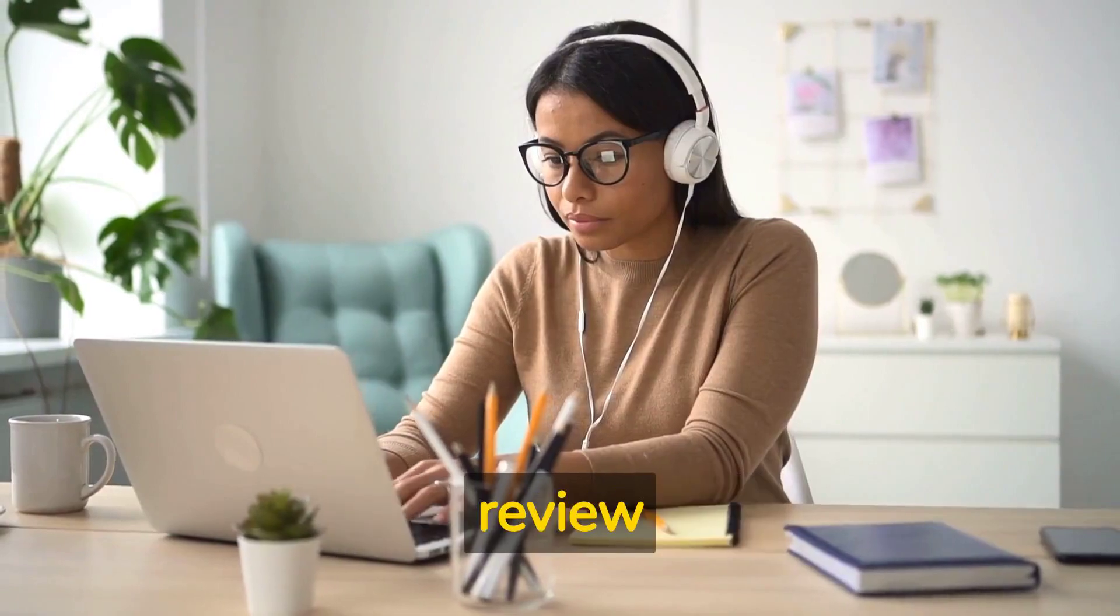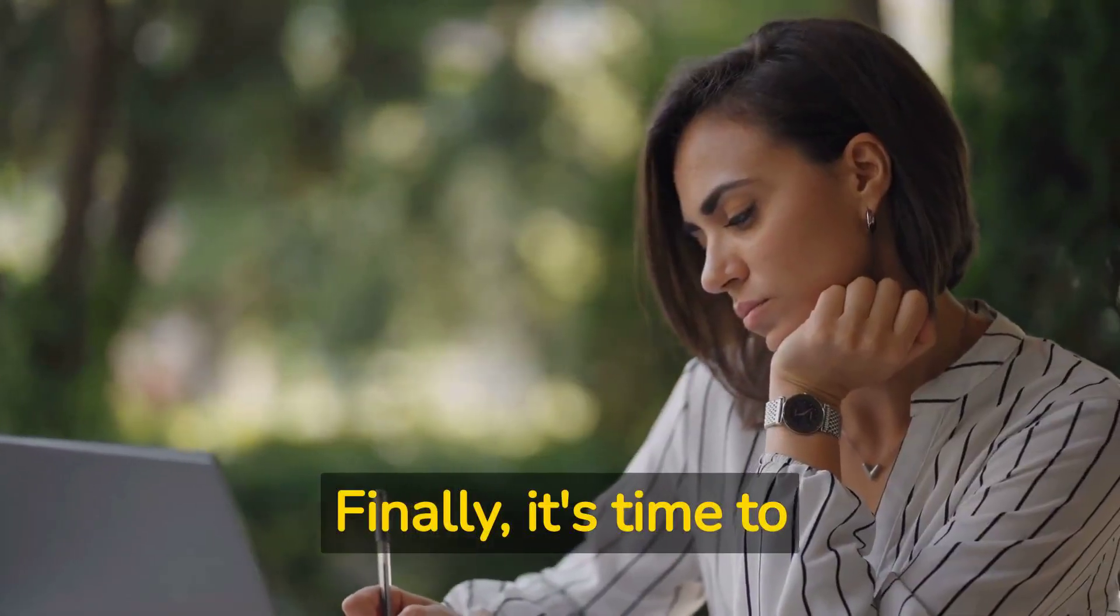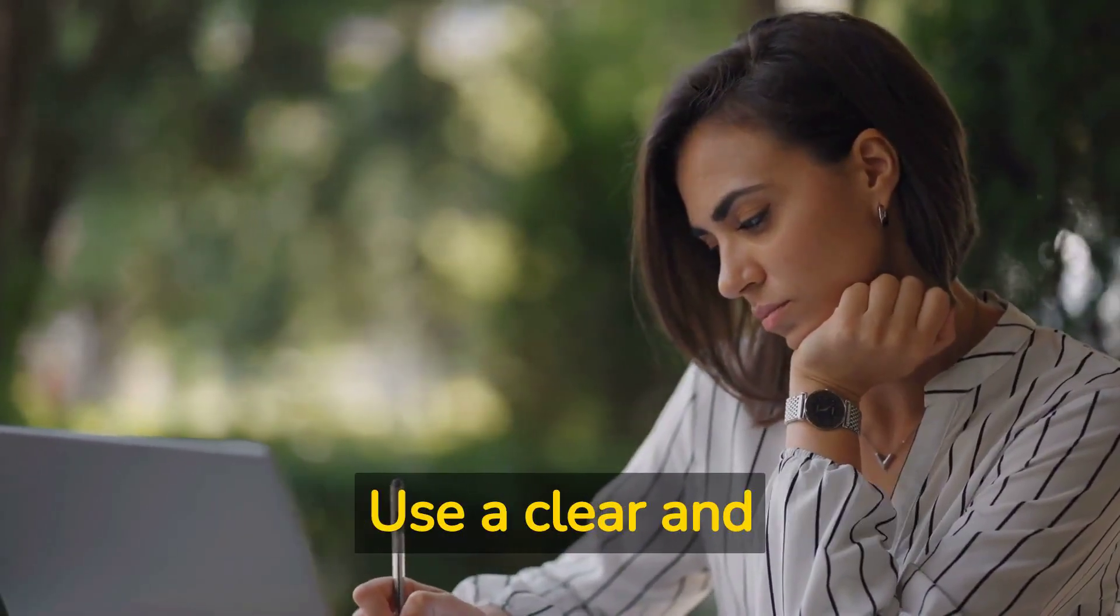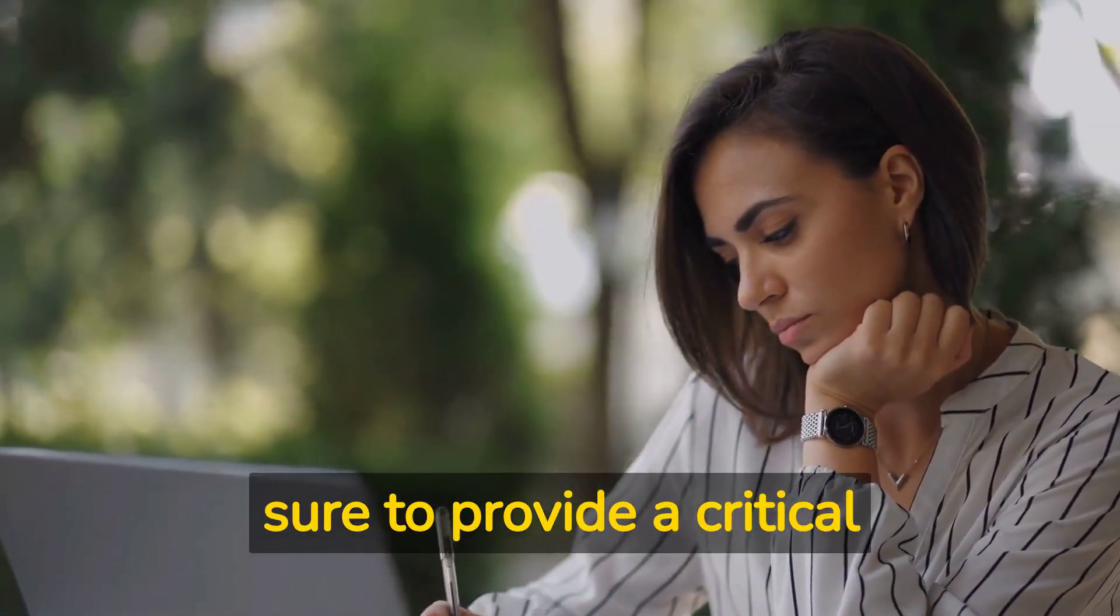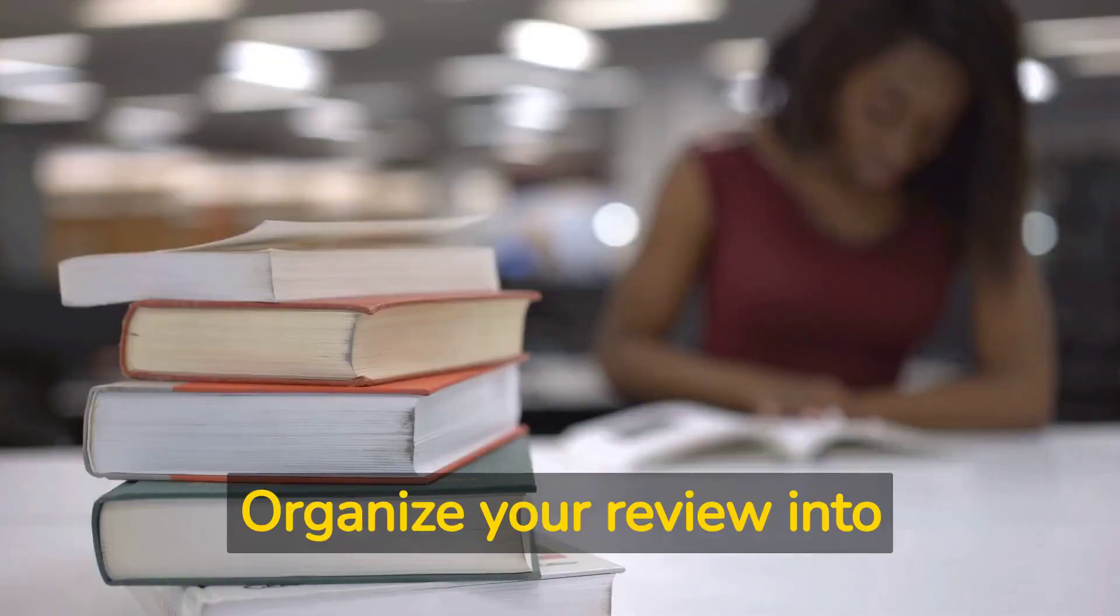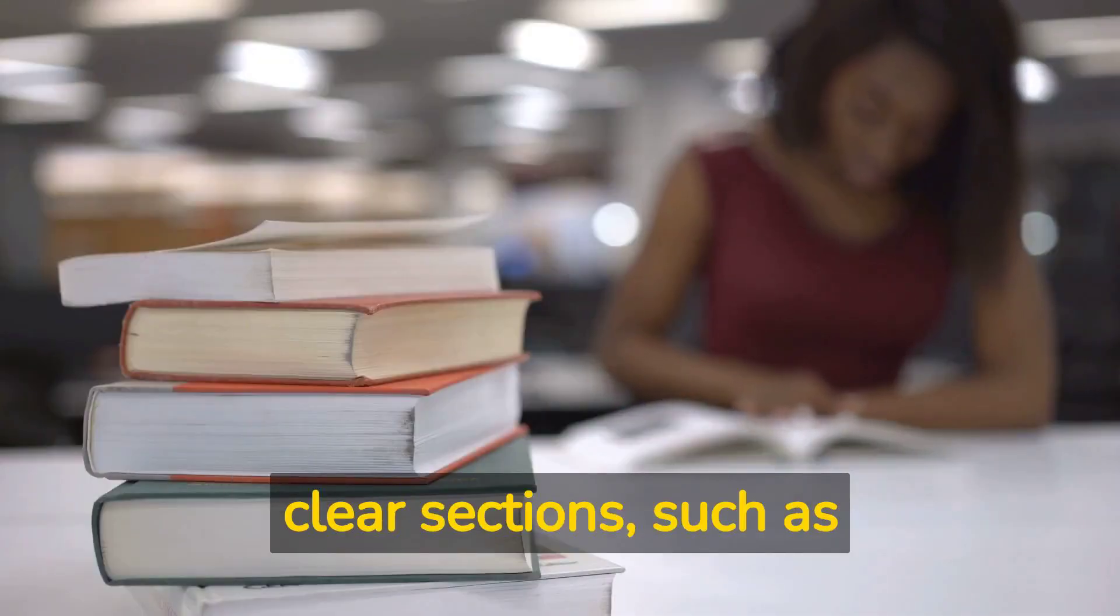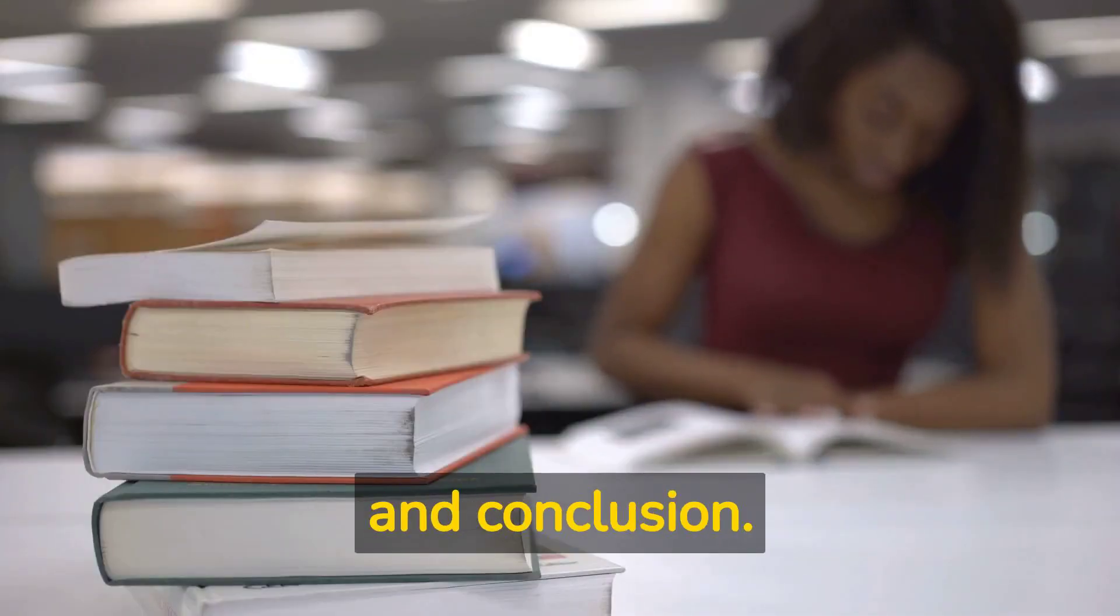Step 5: Write the review. Finally, it's time to write your literature review. Use a clear and concise writing style and be sure to provide a critical analysis of the literature. Organize your review into clear sections, such as introduction, body, and conclusion.